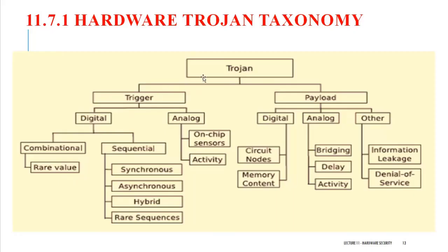If you take a hardware Trojan, there are two different parts available. The first one is the trigger part and the second one is the payload part. The trigger is going to be the condition or the event, and payload means what the Trojan is going to do.